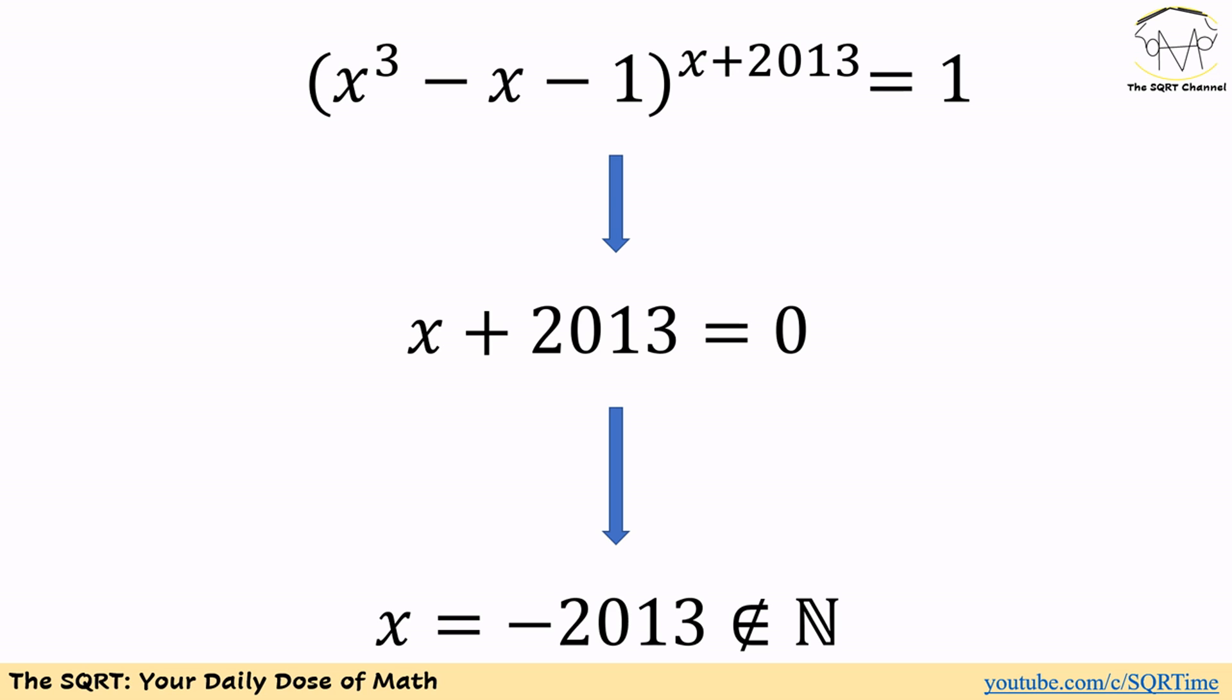We have another option to have the whole expression equal to 1. We are going to try x + 2013 = 0, and remember we don't want the base to equal 0.